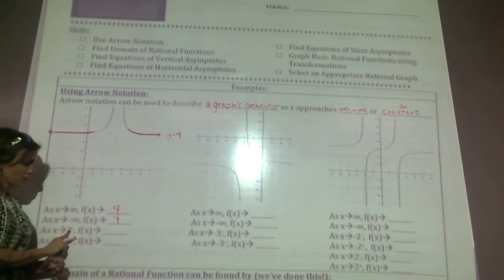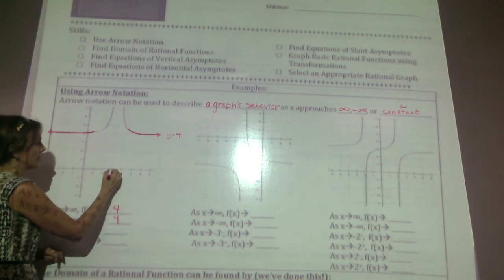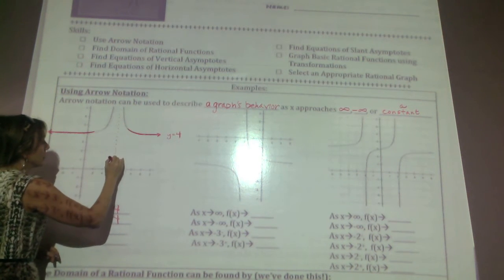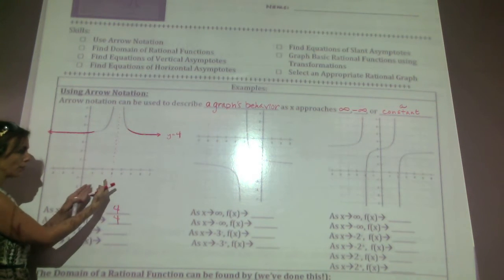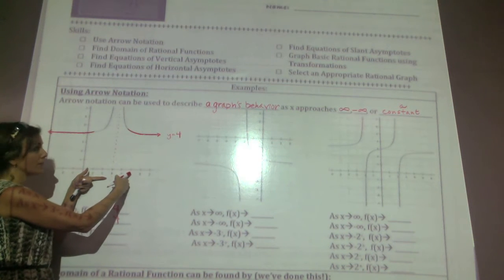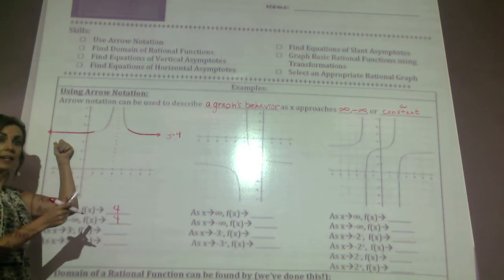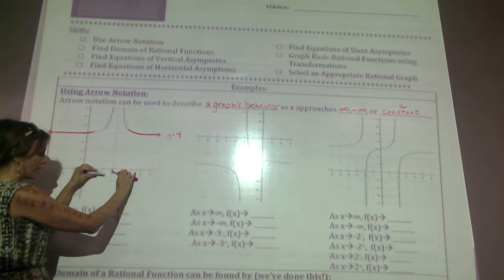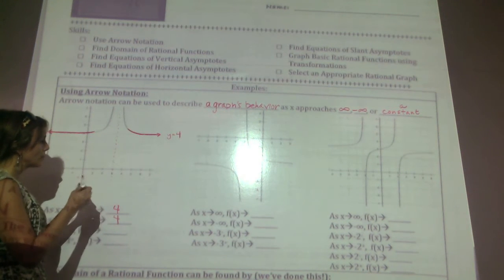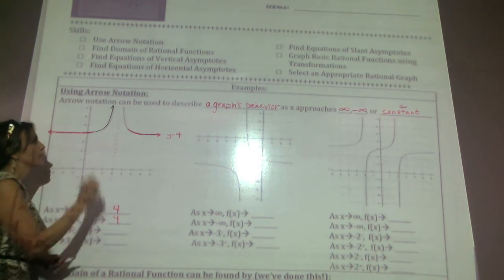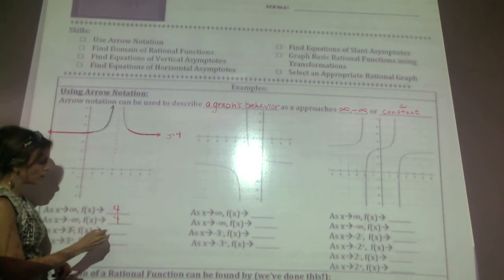As x approaches 3 from the left — what is f of x approaching? I come over to x equals 3. Notice that to get to 3, I can come from the right or from the left, unlike infinity which only has one direction. That negative superscript tells us I'm coming from the left. Approaching 3 from the left, the graph looks like it's going infinitely up, or towards positive infinity.